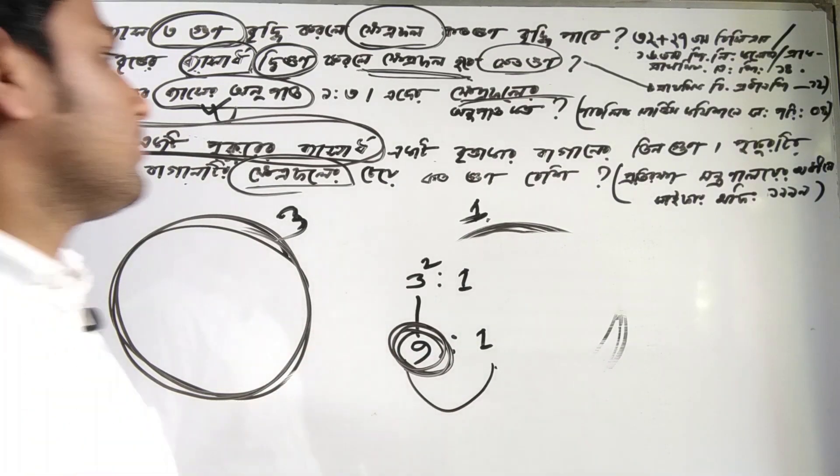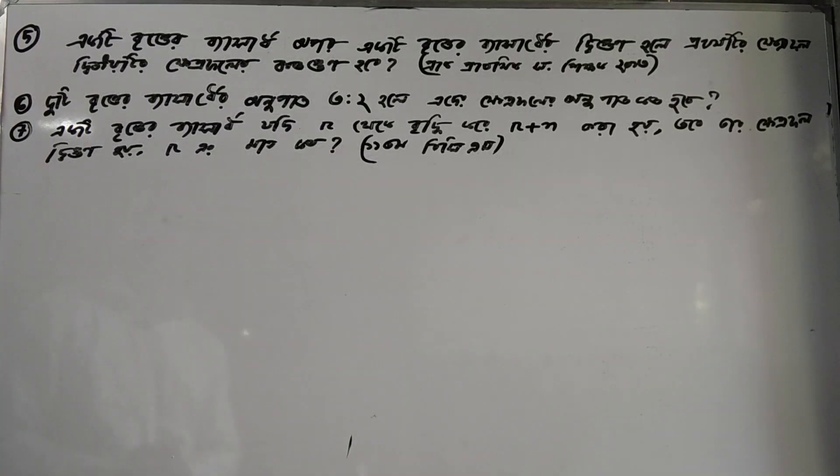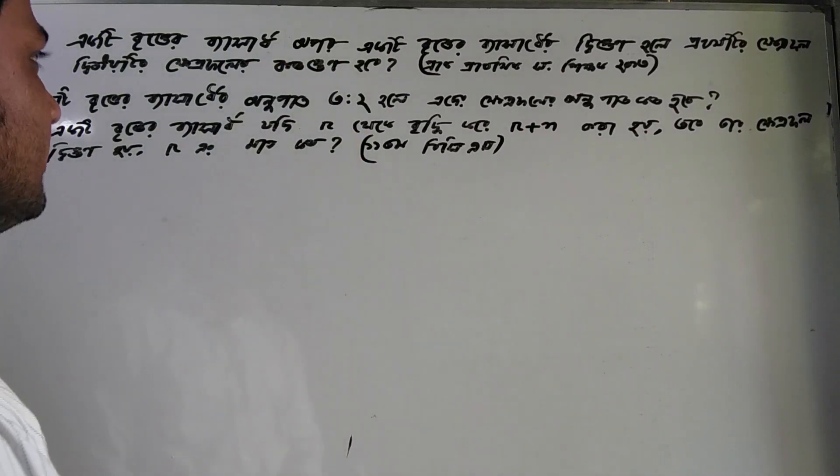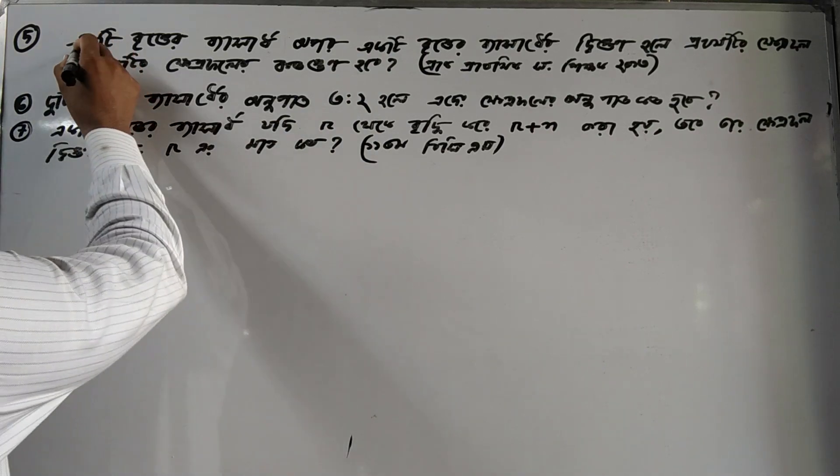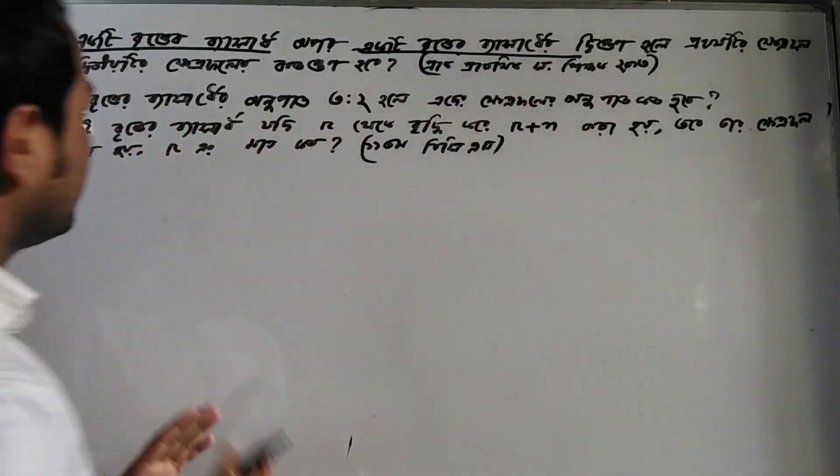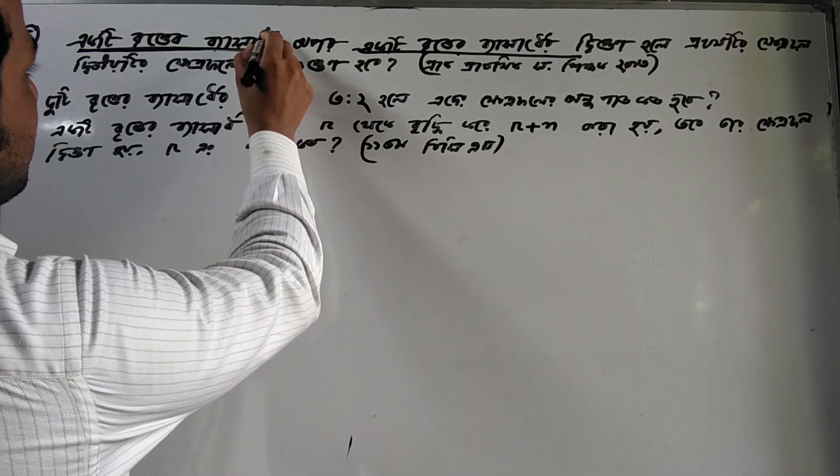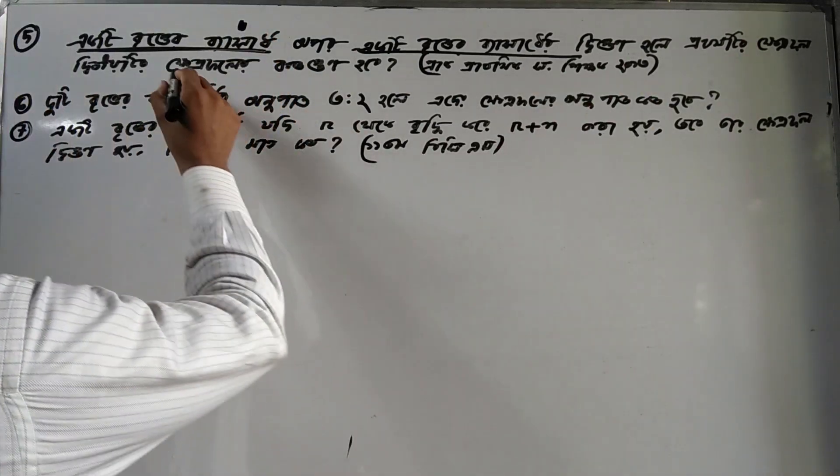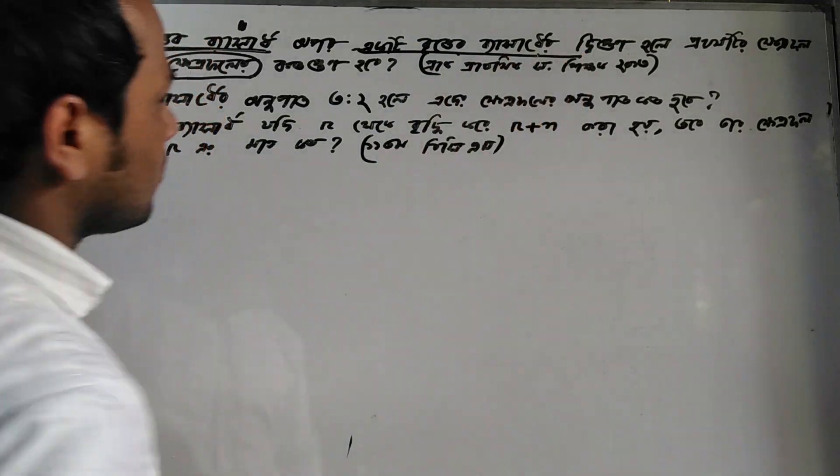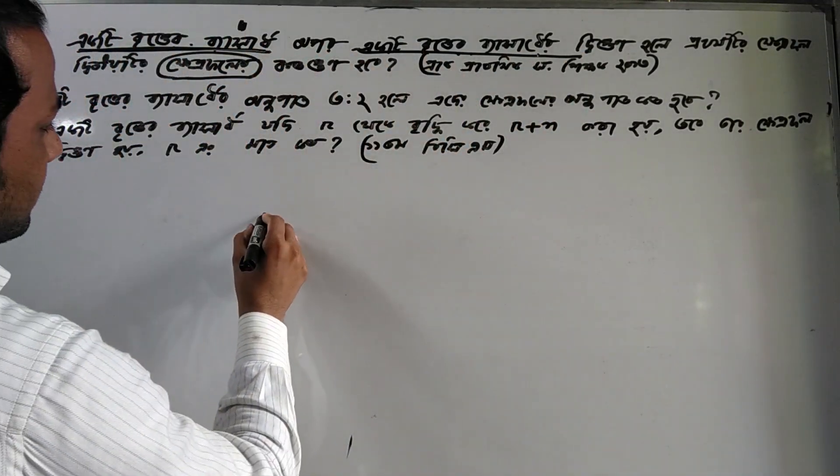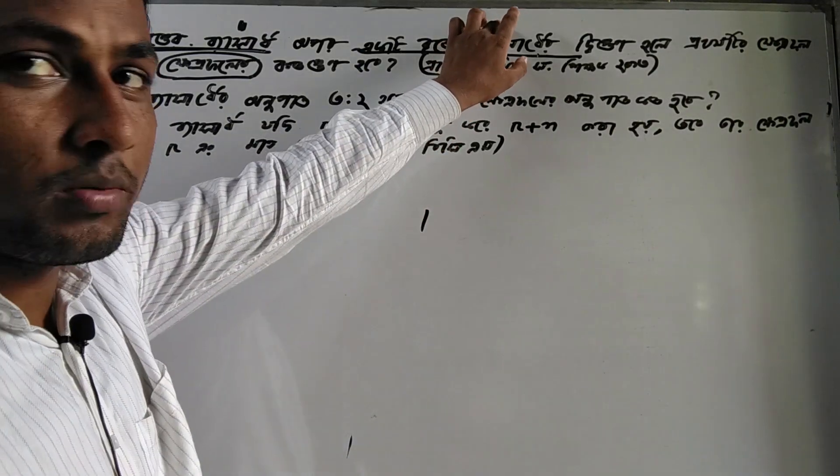For this particular problem about activities and profiles, we need to count carefully. Looking at the numbers, we can see the relationship. The answer will come from properly identifying what we're calculating and applying the correct formula to the given values.